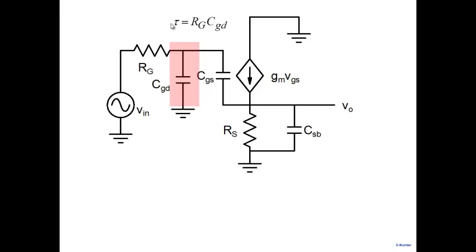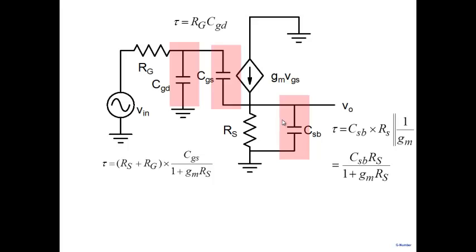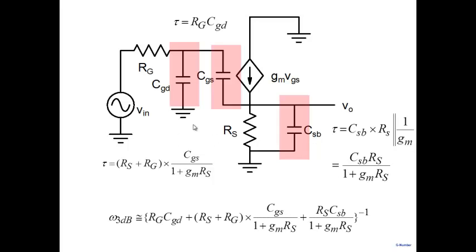Using the open-circuit time constant method: CGD sees simply RG. CGS involves a more complex calculation — the net resistance seen by CGS is (RS + RG) / (1 + GM·RS). The output capacitance CDS sees the output resistance 1/GM in parallel with RS; more accurately, 1/(GM + GMB) in parallel with RS. Summing all these time constants gives the 3 dB frequency. The more accurate approach is a full transfer function, which shows two poles and a zero.